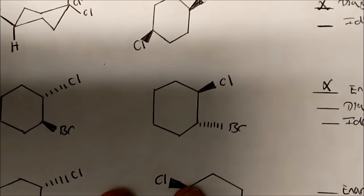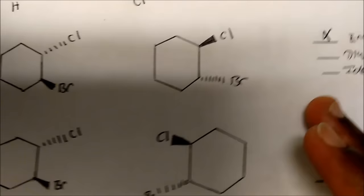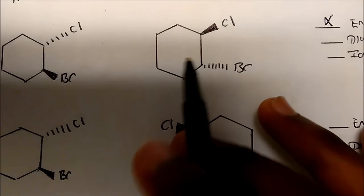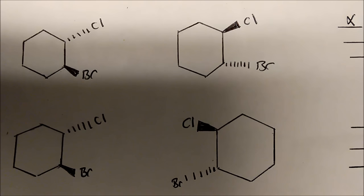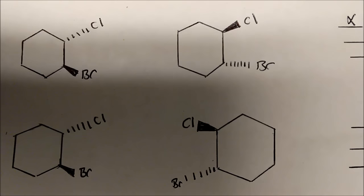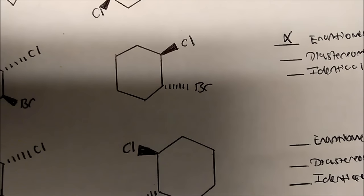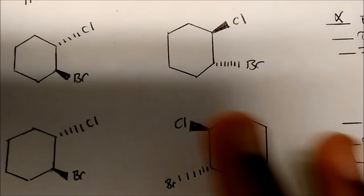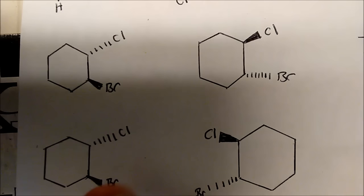How about this pair? Here we have a chlorine going away and the bromine having a wedge. But here, the molecule is flipped — the chlorine is now coming out at you and the bromine is going away. I put these two together to illustrate something. These are actually identical — the same molecule. If you take this molecule and flip it over, your chlorine that was going away will now be coming out at you, and your bromine that was coming out will be going away, which is exactly what you see here. It's just the same molecule flipped.